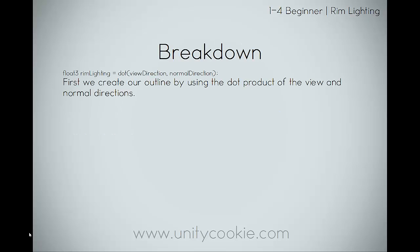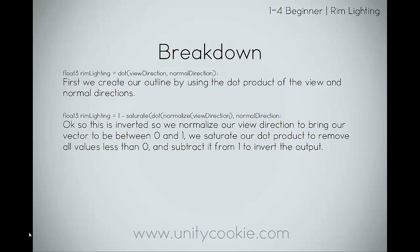First, we create an outline by using the dot product of the view and normal directions. If you remember, the dot product means that as our view direction faces the same direction as our normal direction it will be one, and when it is facing away it will be zero — giving us a gradient fall-off from the center to the outside. This is actually inverted, so we normalize our view direction, bringing our vector to be between zero and one. We then saturate the dot product to remove all values less than zero and greater than one — you can always use a max of zero — and then subtract it from one to get our final rim lighting.